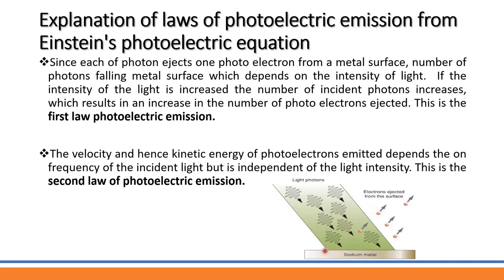The number of photoelectrons ejected from the metal surface is directly proportional to the intensity of the incident light. When intensity increases, more photons hit the metal surface, so more electrons are ejected. This is called the first law of photoelectric emission.